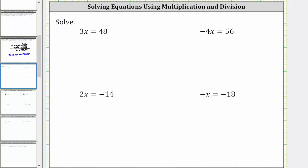We want to solve the given equations. For the first example, we have 3x = 48. The solution is a value of x that satisfies the equation or makes it true. To solve the equation algebraically, we need to isolate the variable x. Since 3x means three times x, to undo the multiplication and solve for x, we need to divide both sides of the equation by three.